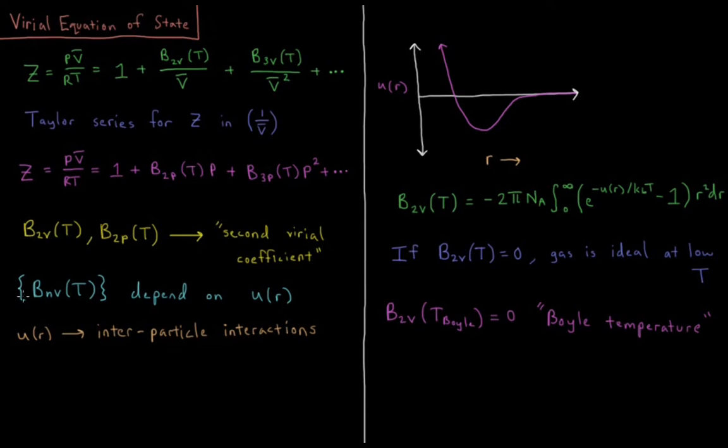And so what these set of virial coefficients get us is an expression for what the compressibility factor of this gas is. It really tells us what is the relationship between our molar volume and our pressure and temperature when we don't have an ideal gas.